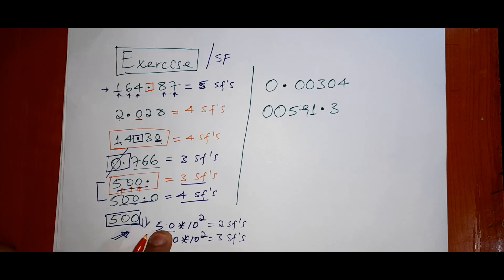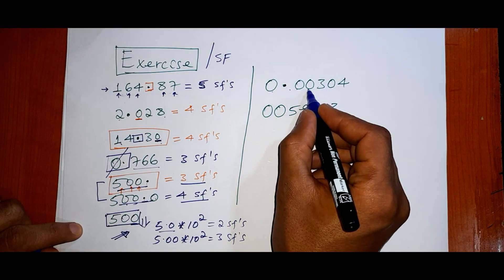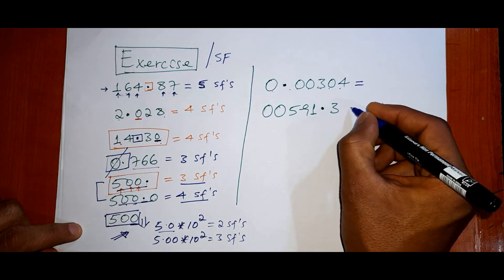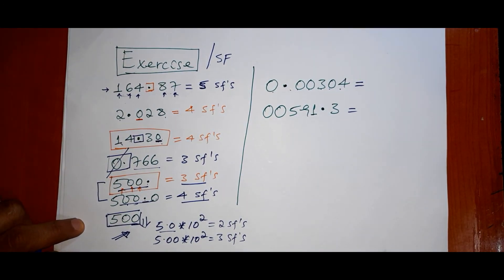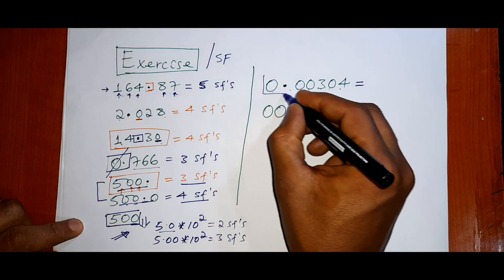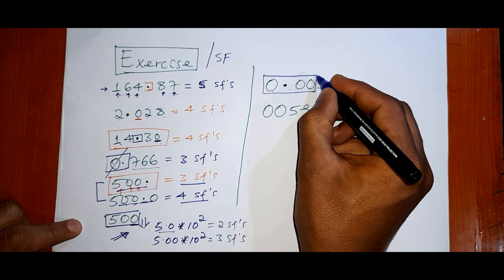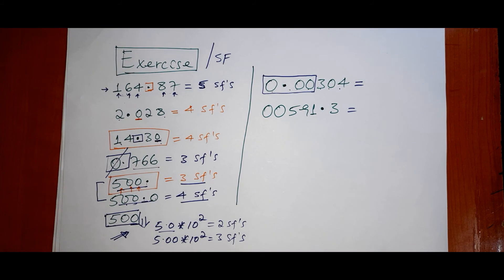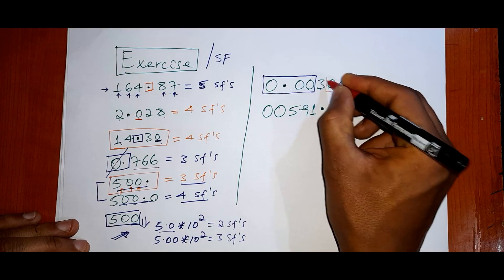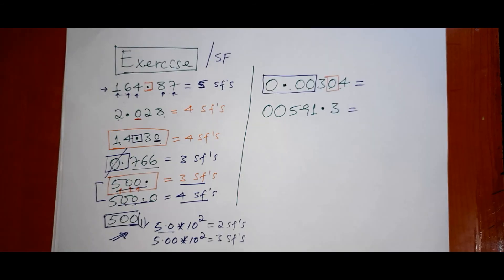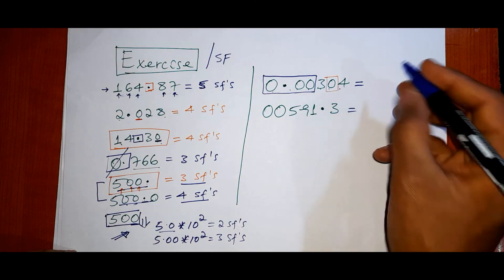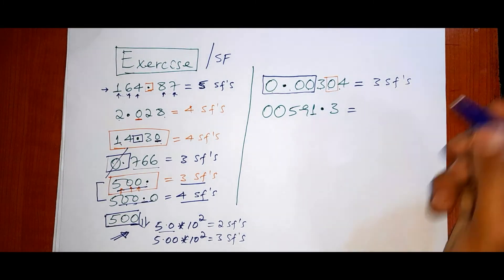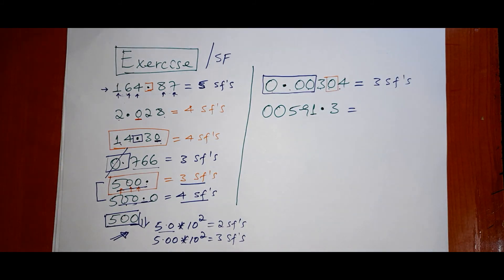Recommended two significant figures. Ten. 0.00304. Three significant figures. This, the zeros - 0.00304 - the zeros at the beginnings of the number are not considered. This one, the zero between the number is considered. So 1, 2, 3 - three significant figures. Three significant figures. Zeros at the beginning are not counted.